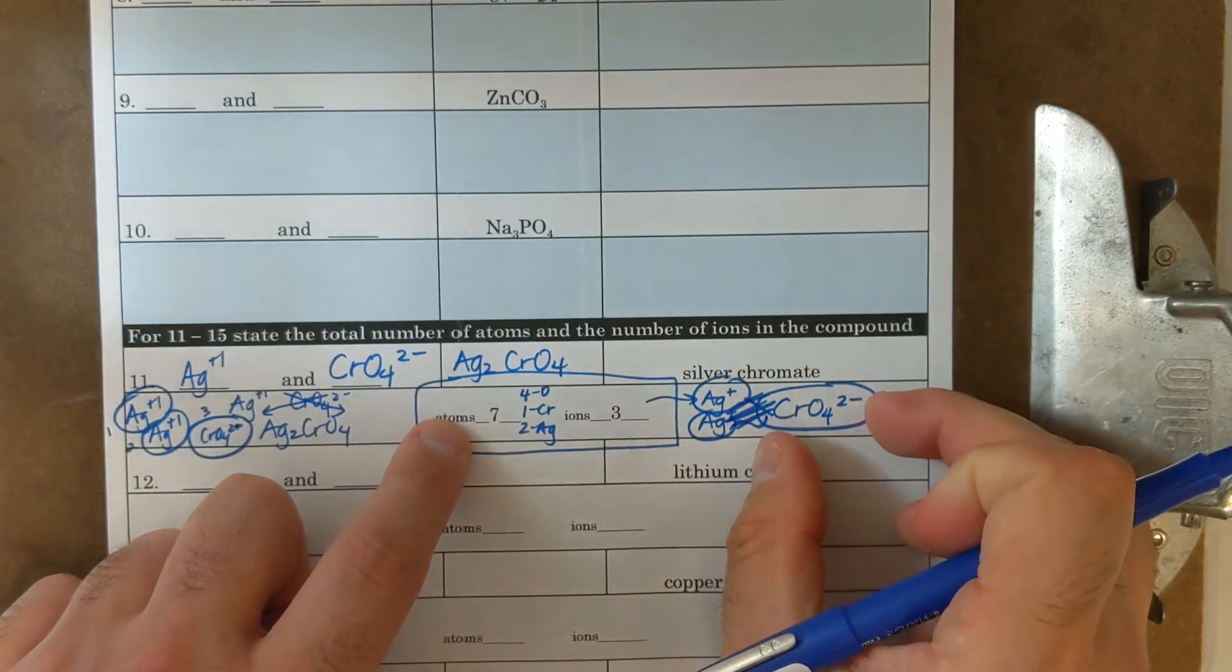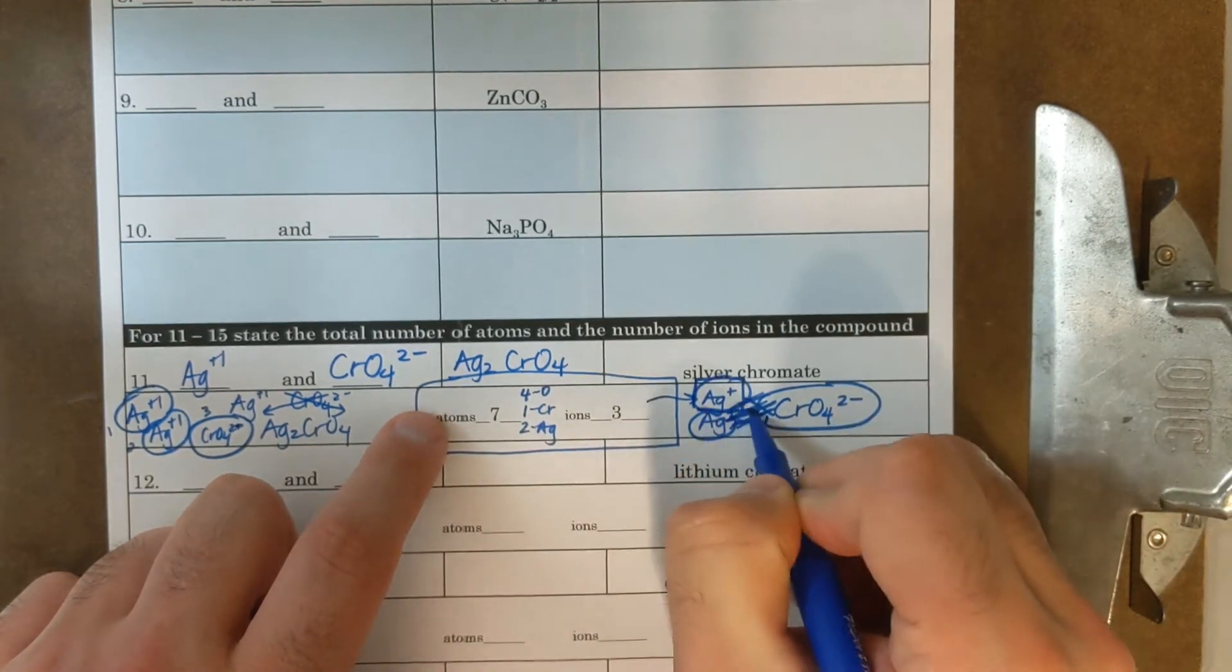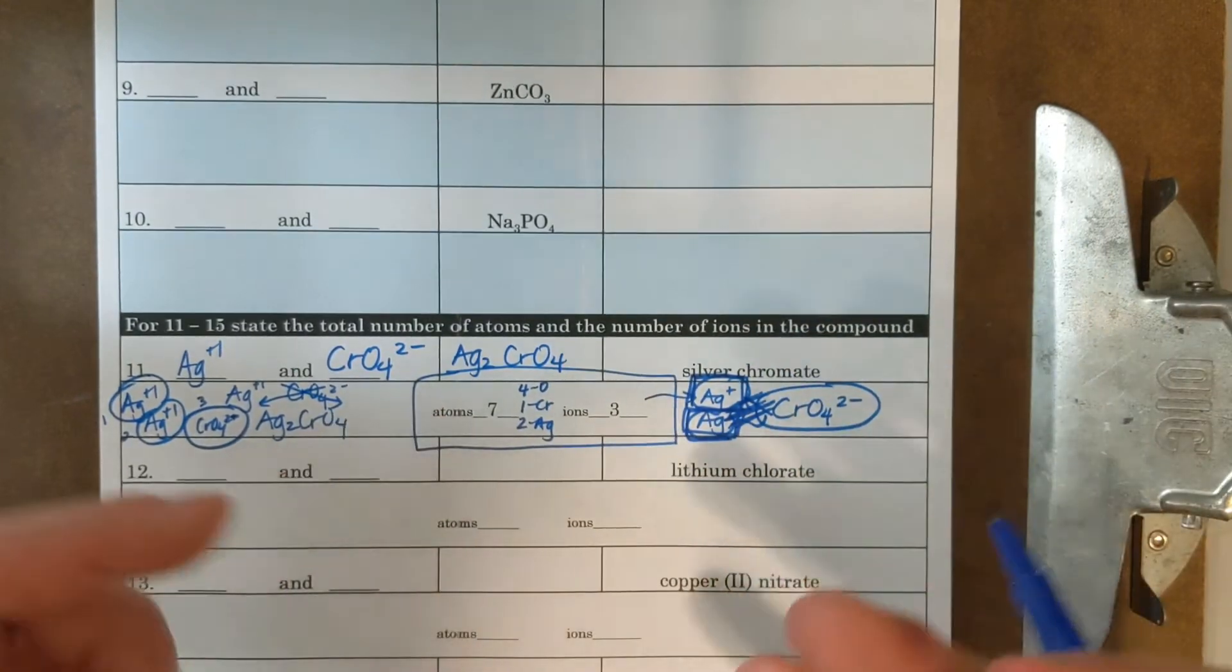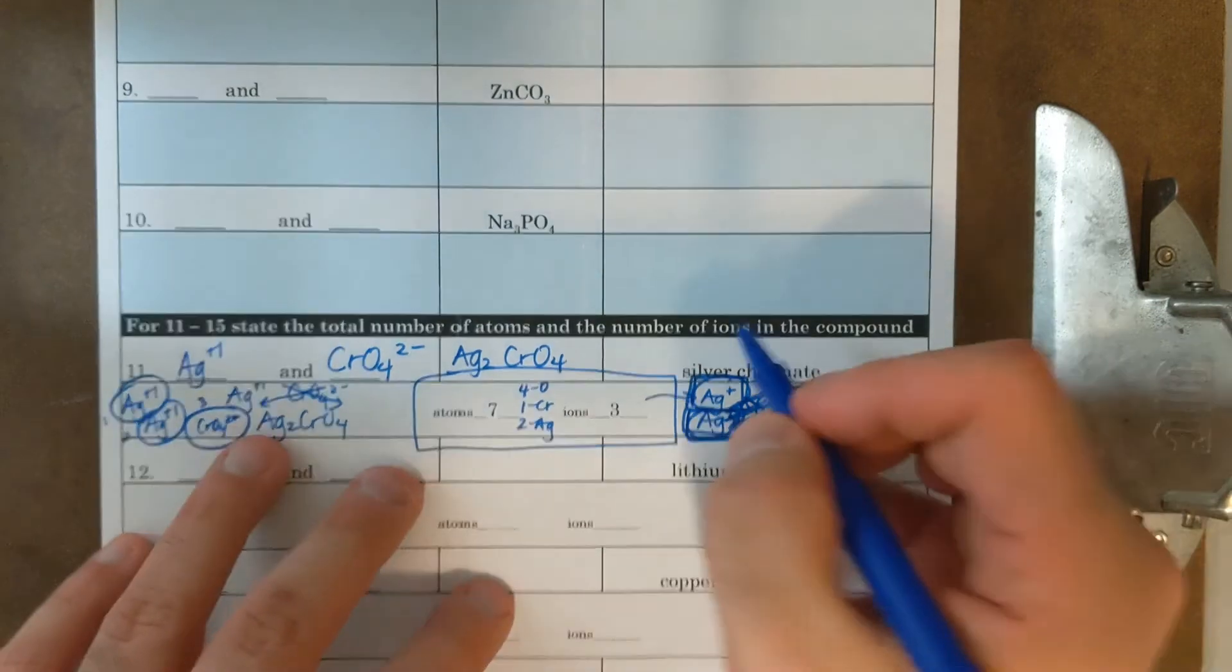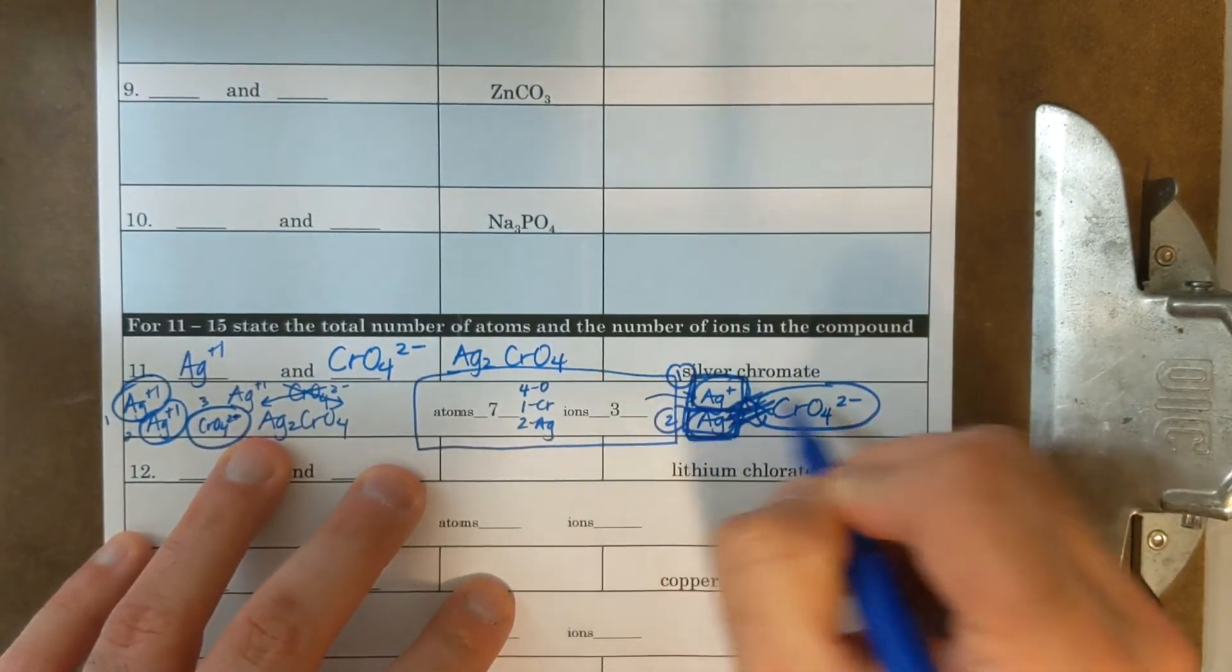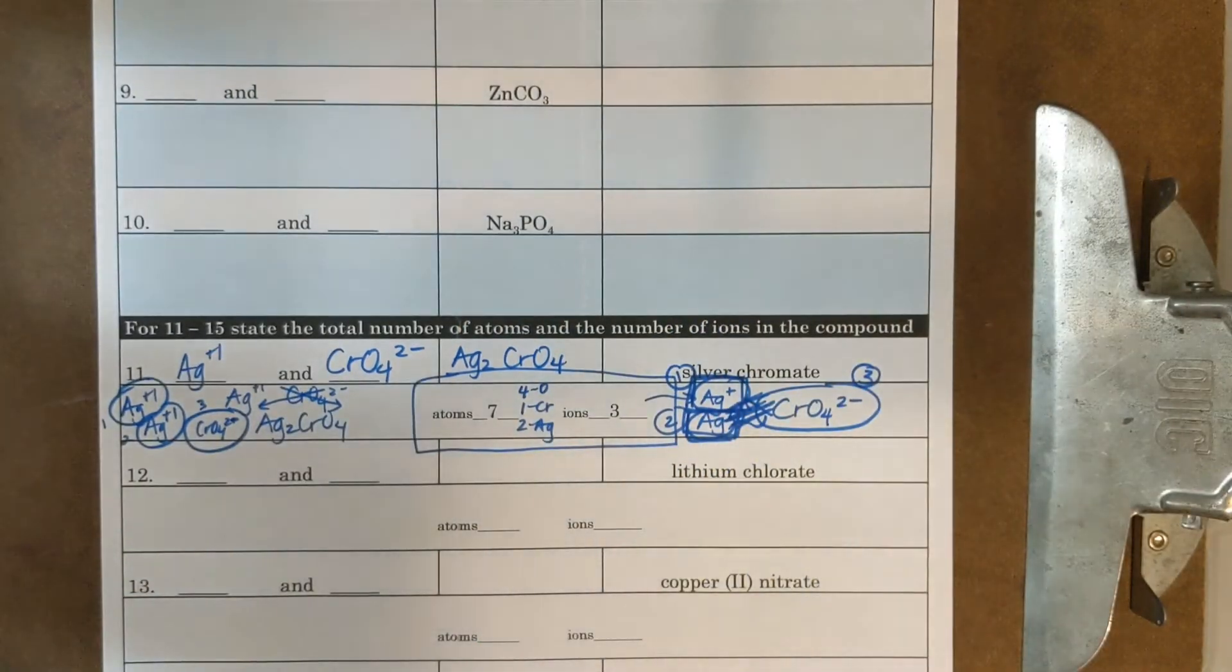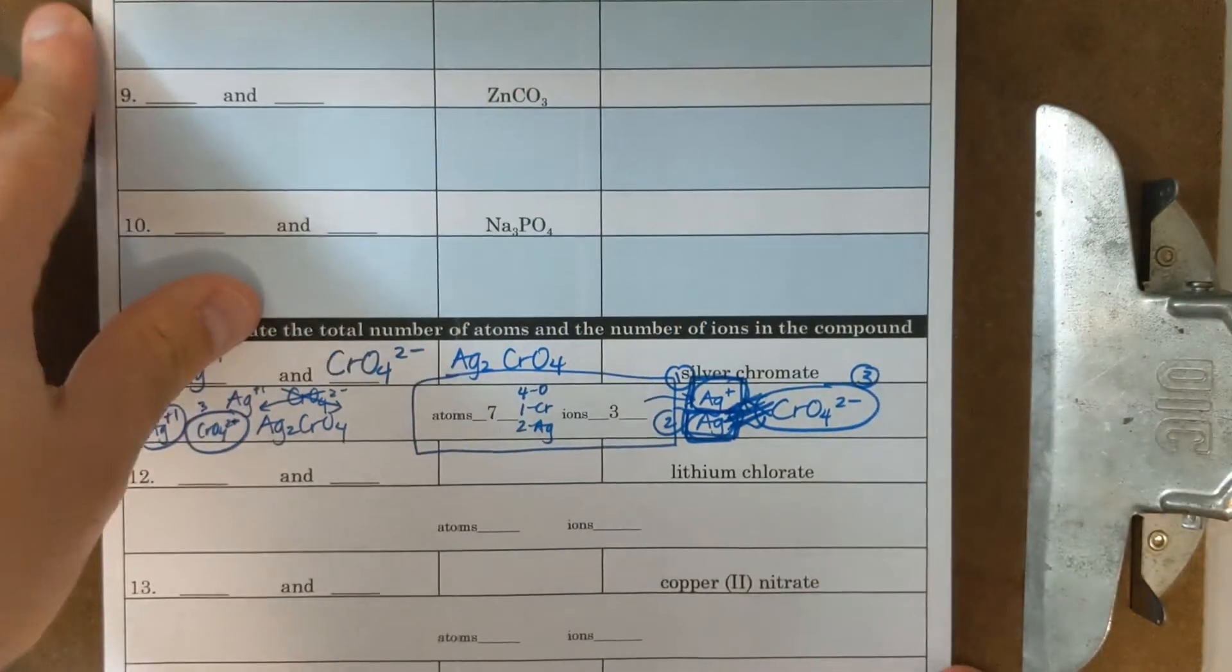There is a difference between the number of ions in solution, ions are going to, or ions in general, ions are going to be the AG plus, AG plus, and the CRO four two minus. This stays together as a whole ion. Okay. So all of that stays together as a whole ion. This is the chromate ion. It stays together as one thing. And these are the two silver ions. They are separate and break apart into their own ions as well. So I have one, two, and three. I have three ions in total, but I have seven atoms altogether.